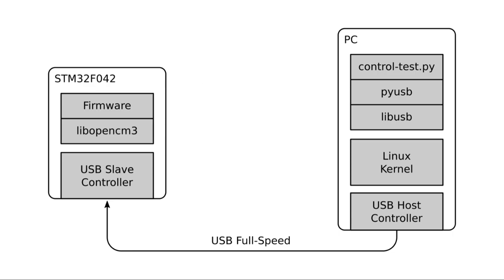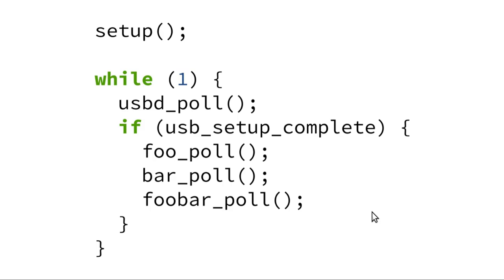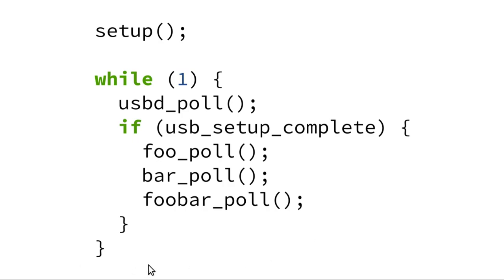We don't know what the miscommunication was on the wire, and we don't know what state the microcontroller got into. It could be a problem with our firmware, with libopencm3, or even with the silicon hardware of the slave controller — though that's quite unlikely for this well-used processor. We're in a real fog. We can't really ask for help on forums either, because we have no information to help someone analyze what's going wrong.